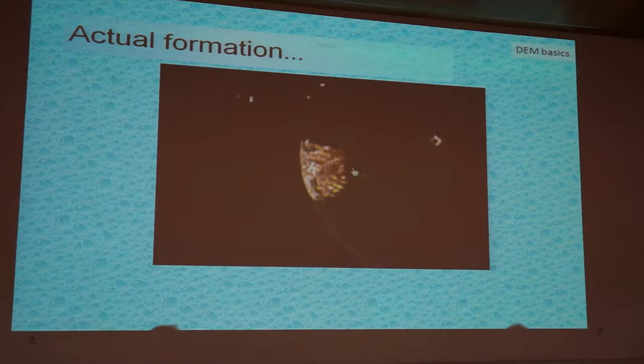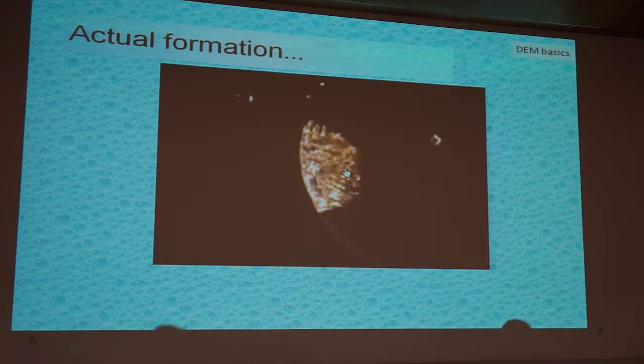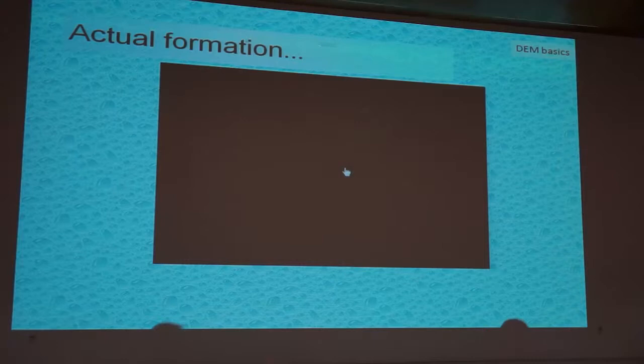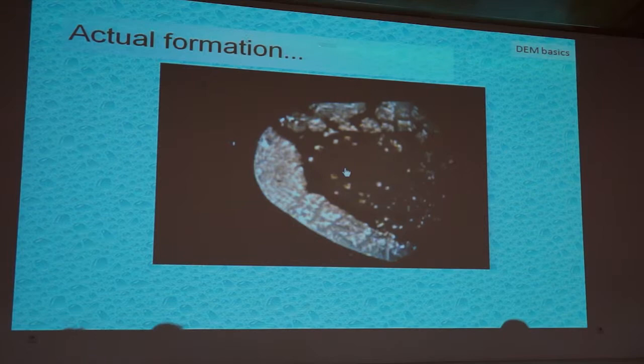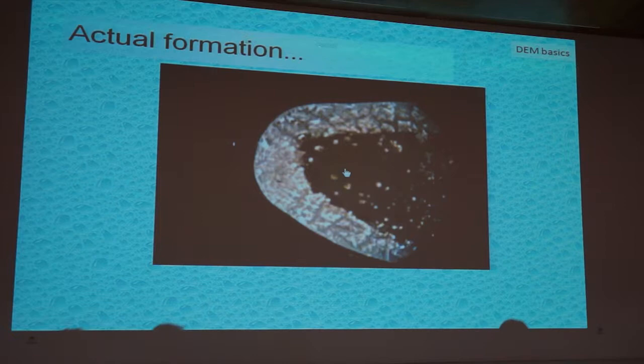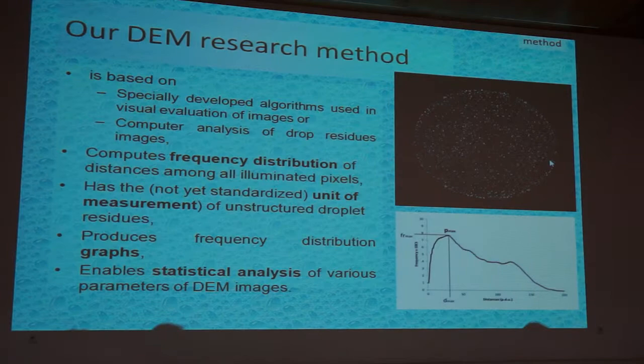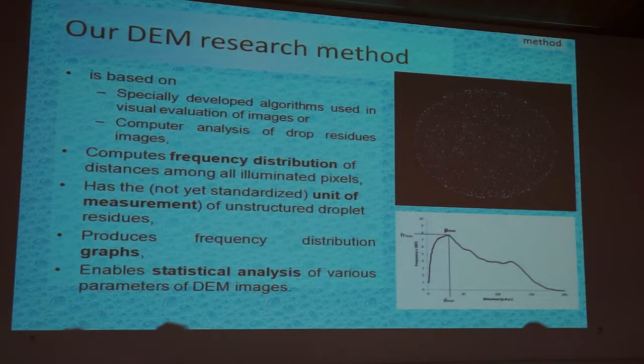I would like to show you how this ring structure is formed — it was very difficult to catch at the exact moment of crystallization. You can see this at 100 times magnification, and now at 40 times magnification of the same process. Just look at this — this is it.